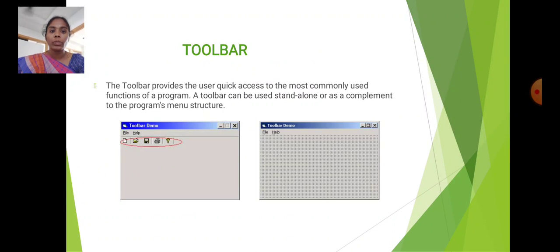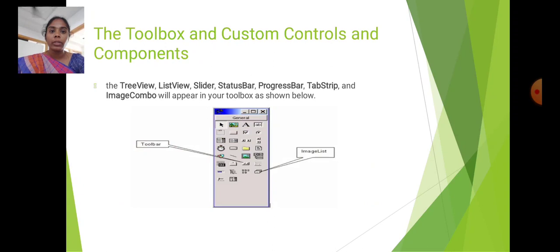The toolbar provides the user quick access to the most commonly used functions of a program. A toolbar can be used standalone or as a complement to the program's menu structure. Next, the toolbox and custom controls and components. The tree view, list view, slider, status bar, progress bar, tab strip, and image control will appear in your toolbox as shown below.